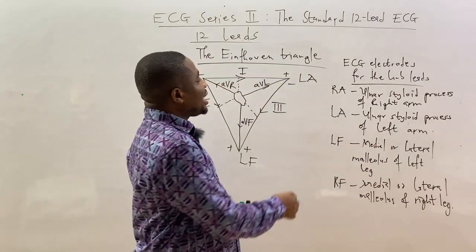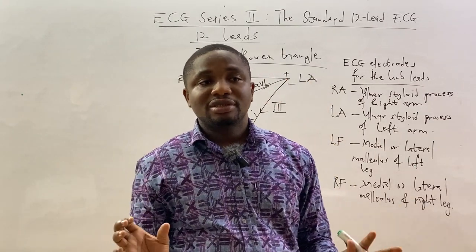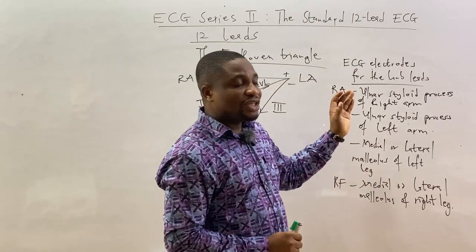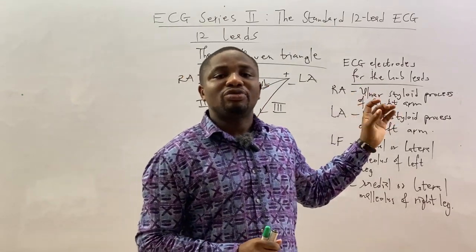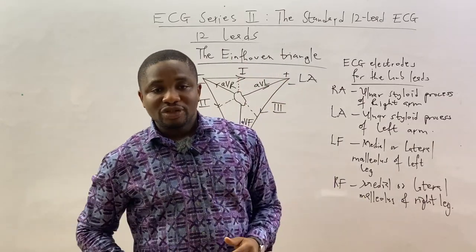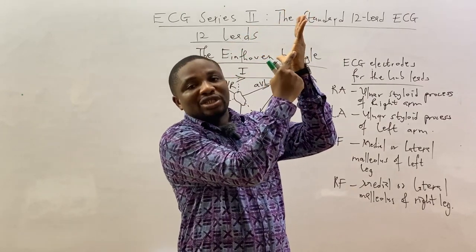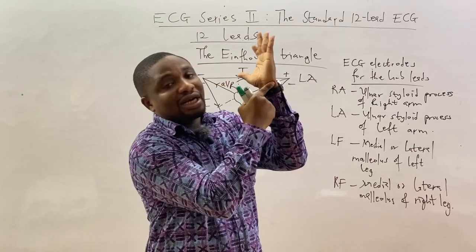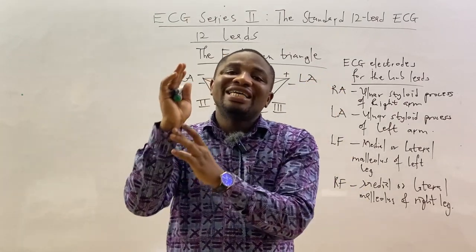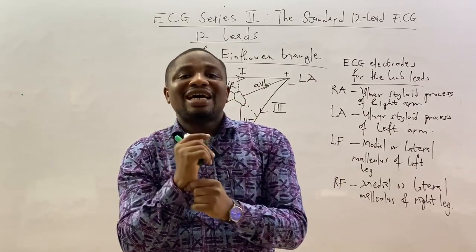The first electrode is placed on the right arm — specifically at the ulnar styloid process of the right arm. The ulnar styloid process corresponds to the wrist on the side of the small finger. So the right arm electrode is placed at the wrist on the ulnar side of the right arm.